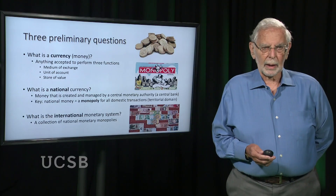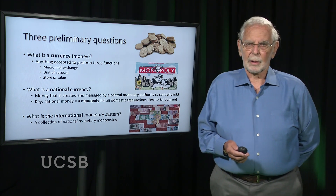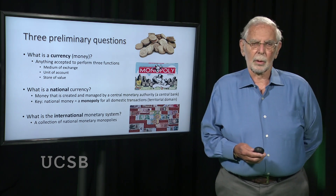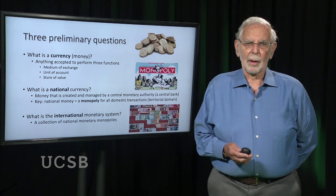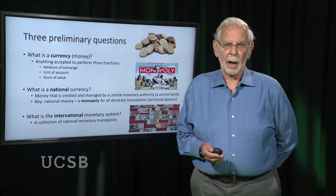A currency is a synonym for money. And how do we define money? We define money by certain functions that can be performed by money. These three functions are medium of exchange, unit of account, and store of value. Anything that serves these three functions is money. Monies are not necessarily limited only to national currencies, but national currencies are the dominant form of money.